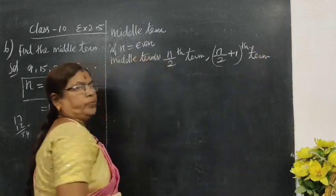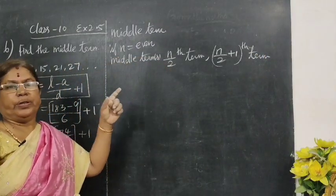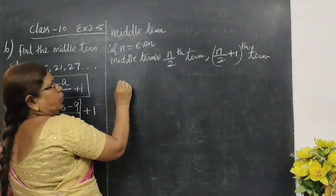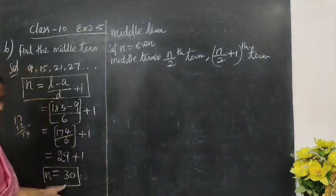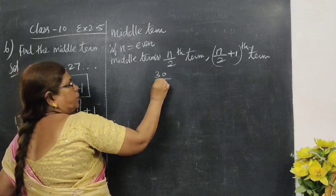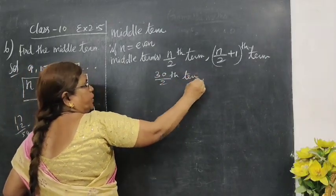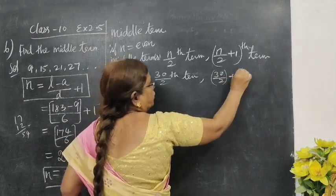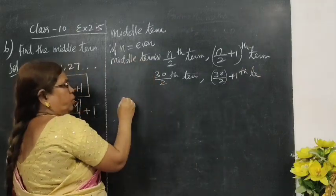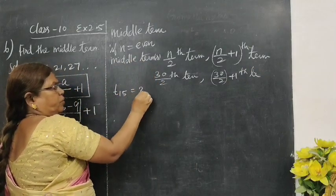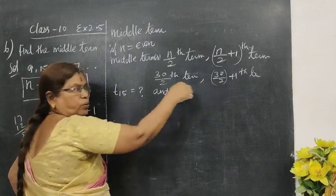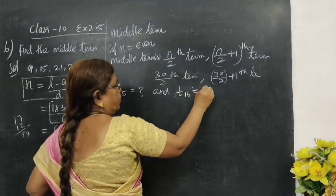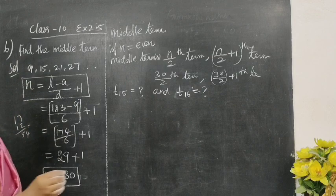If n is even, then n by 2th term... So, n is 30. So, 30 by 2th term and 30 by 2 plus 1th term. Now, 30 by 2 is 15th term. Another one is, 30 by 2 is 15, 15 plus 1 is 16th term. So, T15 and T16.